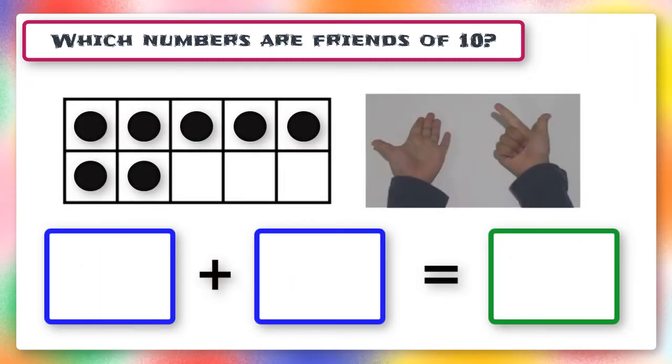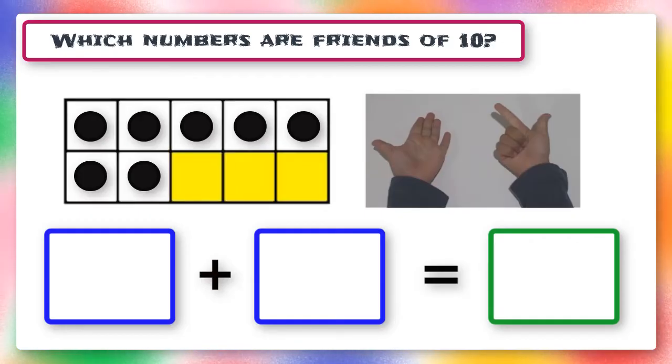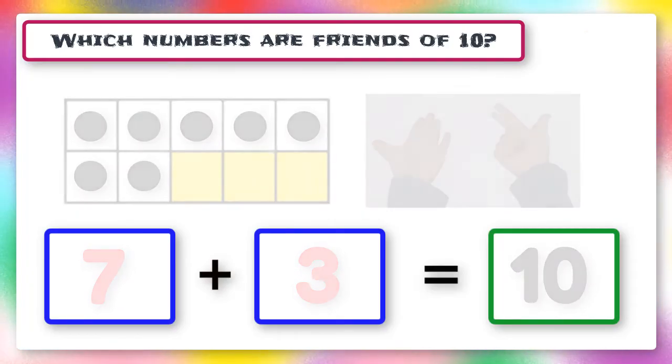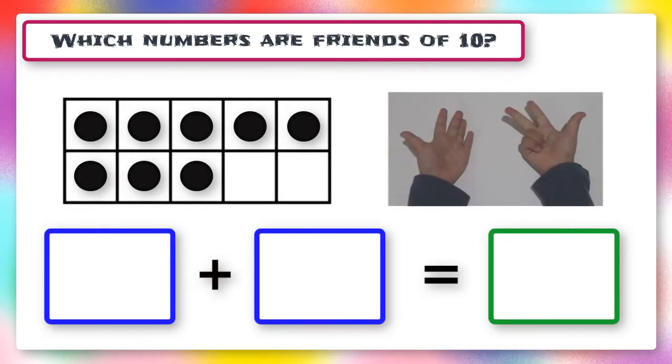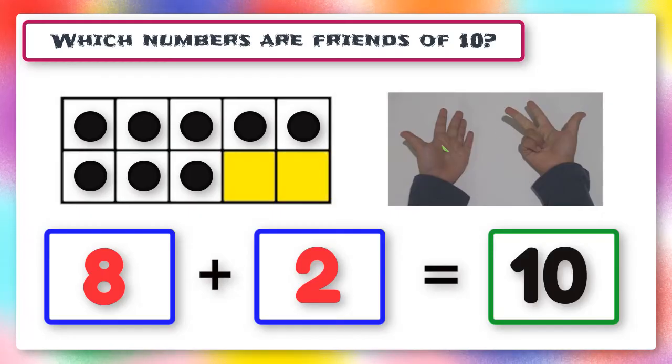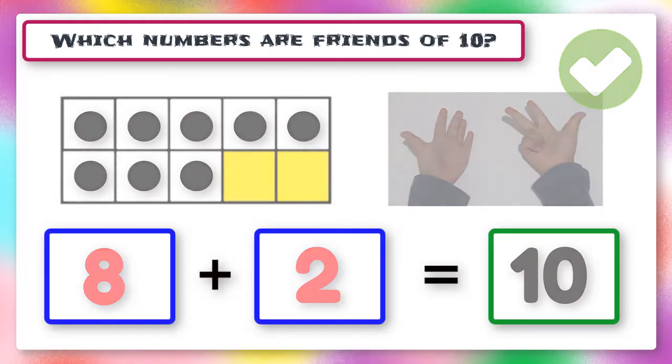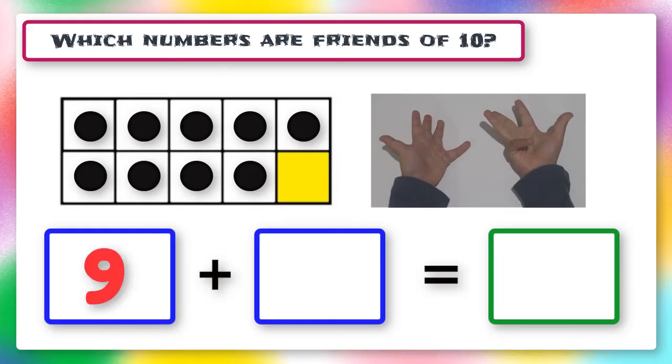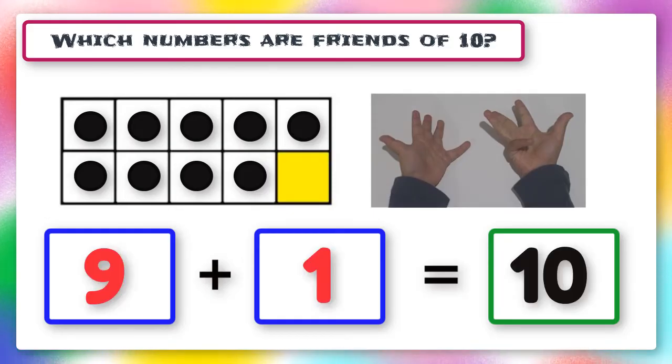7 and what are friends of 10? 7 and 3 are friends of 10. Excellent. 8 and what are friends of 10? 8 and 2 are friends of 10. Well done. 9 and what are friends of 10? 9 and 1 are friends of 10. Awesome work.